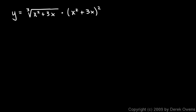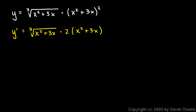This next example is pretty interesting. Y equals the cubed root of x squared plus 3x times x squared plus 3x squared. Clearly it's a product, so product rule. This is the first — the cubed root of x squared plus 3x — times the derivative of the second, applying the power rule, and then the chain rule tells us to multiply by the derivative of the inner function, so times 2x plus 3. That was the first times the derivative of the second.